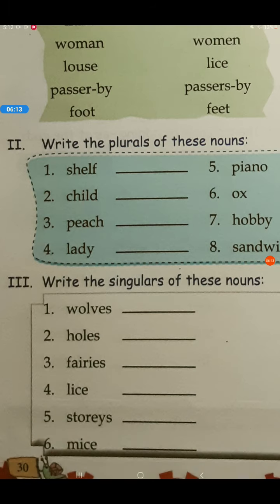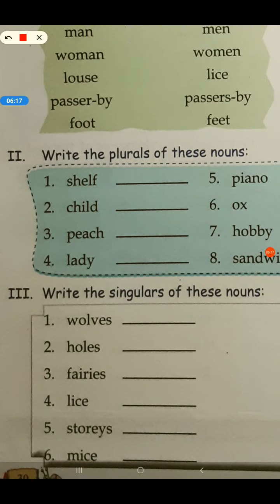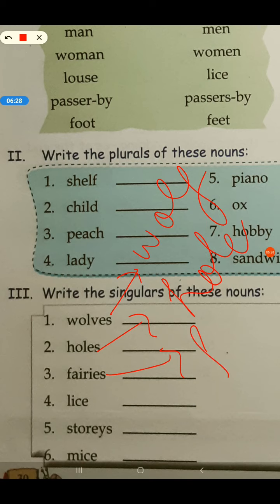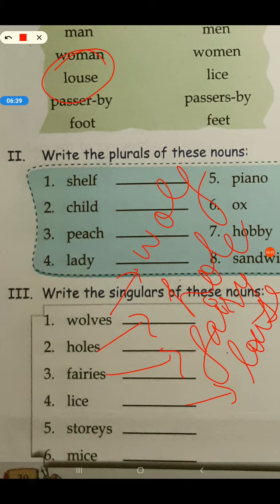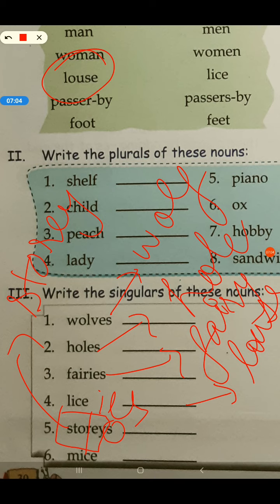Write the singular of these nouns. इसमें आपको पहले हमने plural लिखा, इसमें आपको singular लिखना है. Wolves, wolf. Holes, hole. Fairies, fairy. Ladies का होगा, lady. अभी हमने पढ़ा है ऊपर. Stories. Story. S-T-O-R-E-Y. अब देखो कैसे पता चला? Stories है. अगर S-T-O-R-Y होता ना, तो यहां पे I-E-S लगा होता. क्योंकि Y के बाद S लगा है, that means this is the word. Story. S-T-O-R-E-Y.